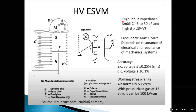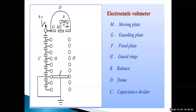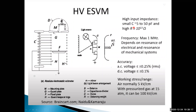This high voltage electrostatic voltmeter has high input impedance, because there is a large gap between the moving plate and fixed plate - it is essentially open circuit. High input impedance with small capacitance in the range of 5 to 50 picofarads, and high resistance greater than 10 to the power of 13 ohms. Frequency is limited to a maximum of one megahertz.